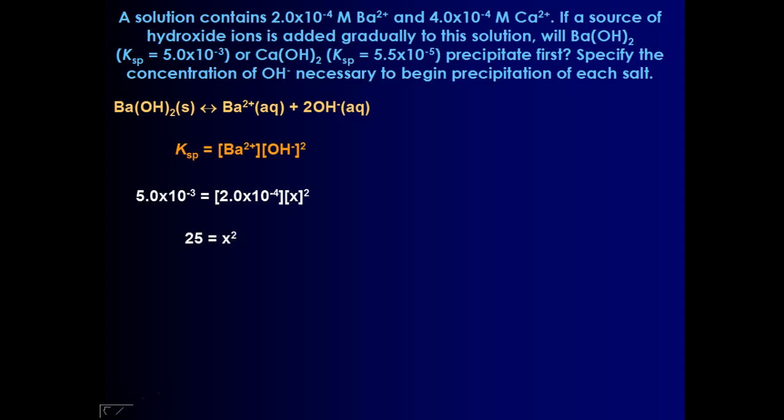If I divide 2 times 10 to the -4 into the Ksp value, I get 25. And if I take the square root of that 25, I get that I would need five molar of hydroxide ions, which is a fairly large amount of hydroxide, in order for this precipitate to form.